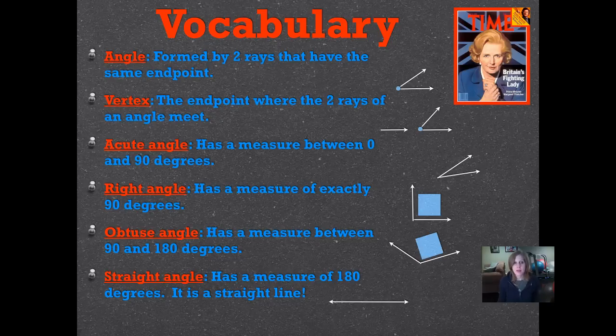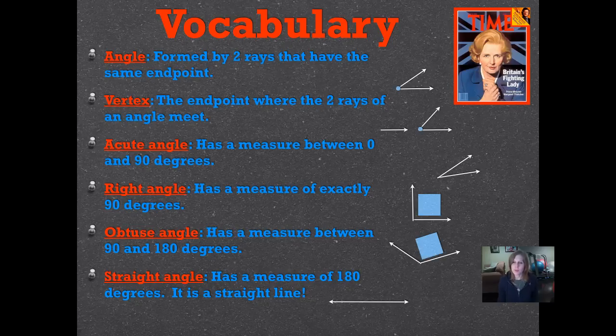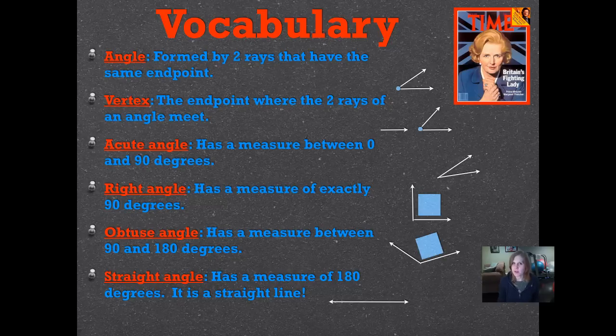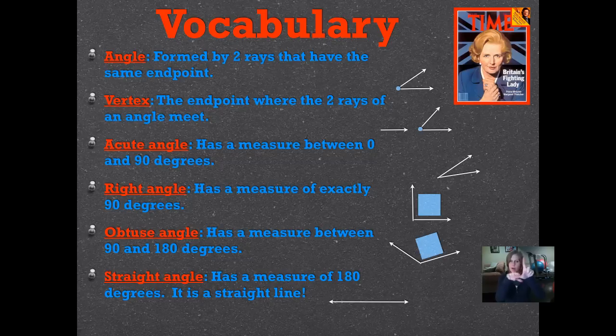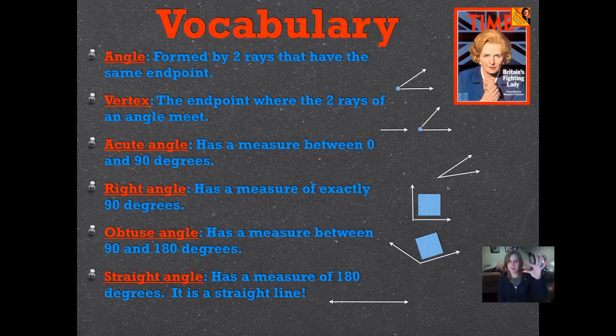An acute angle is an angle that is less than 90 degrees. If this is 90 degrees, this square angle right here, an acute angle we call a cute little angle. That's how you can remember that it's the smaller one. It's a cute little angle.